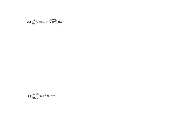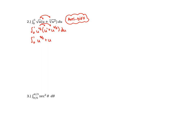Problem number two looks like an absolute mess, but it's just a straightforward antidifferentiation problem. We can rewrite the integrand by distributing u to the 1/2 into u to the first plus u to the 2/3, giving u to the 3/2 plus u to the 7/6 du. We can antidifferentiate using the power rule from 0 to 1.